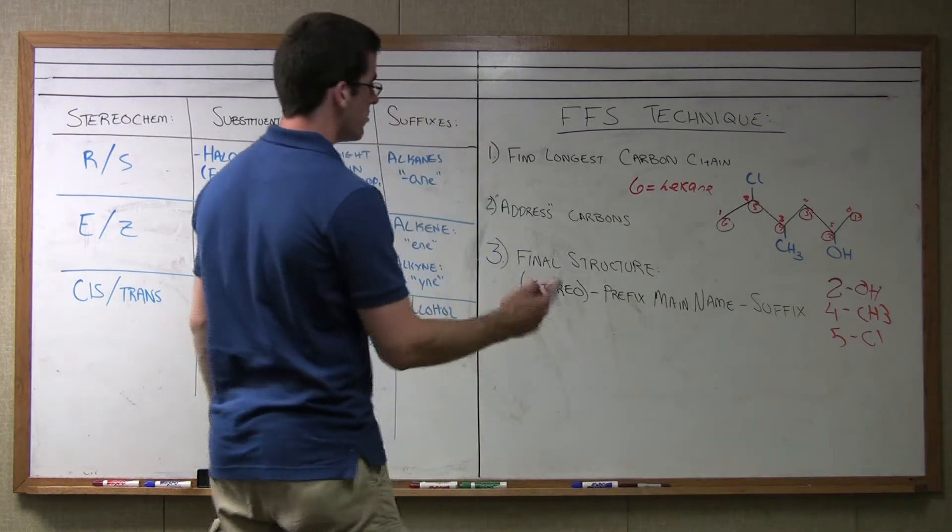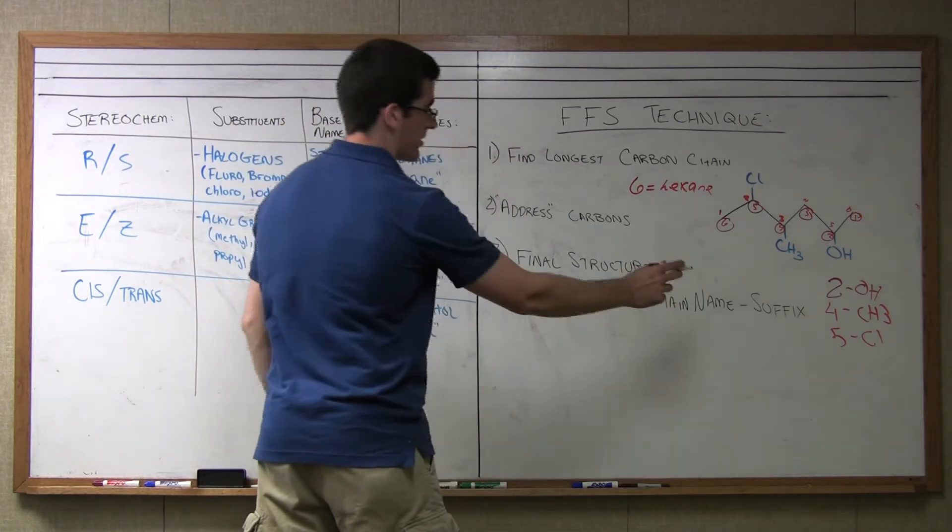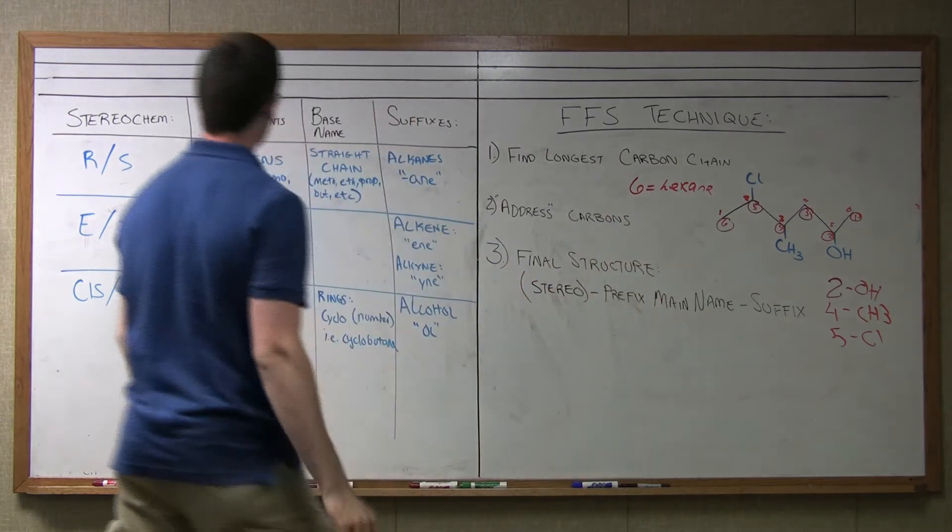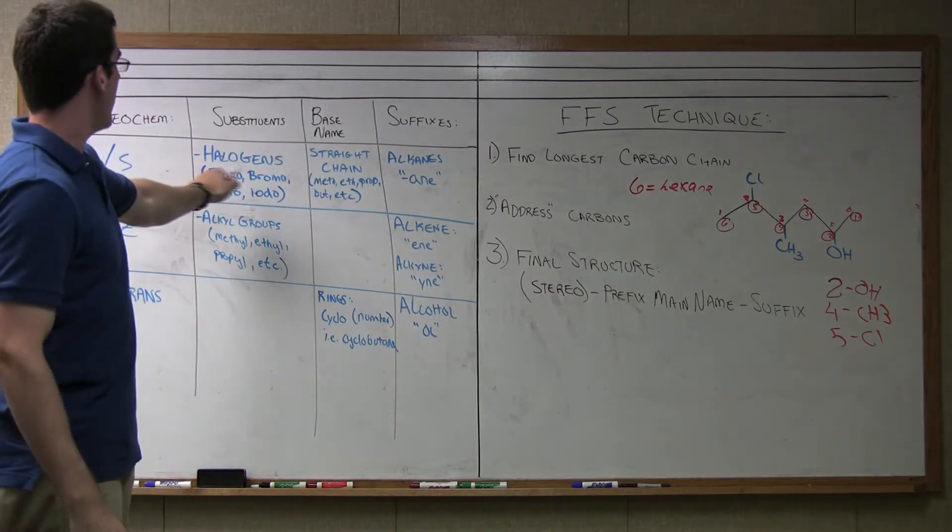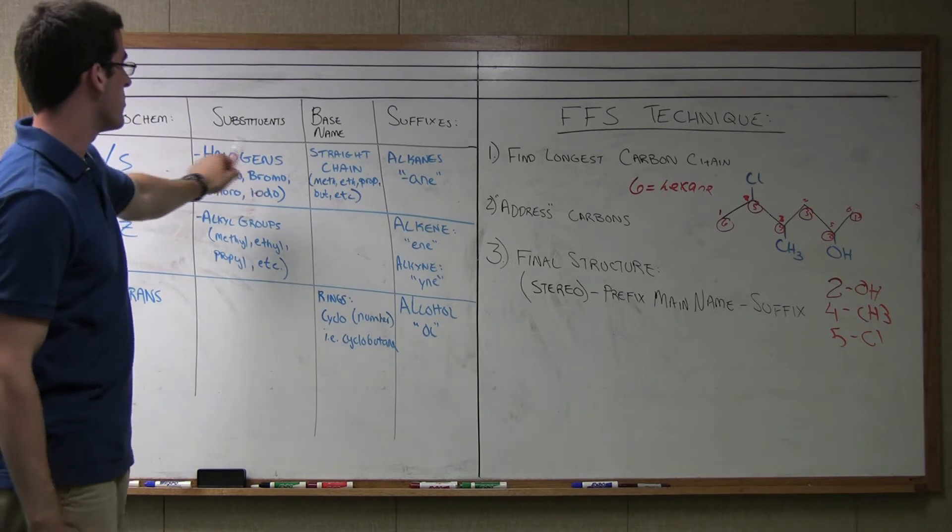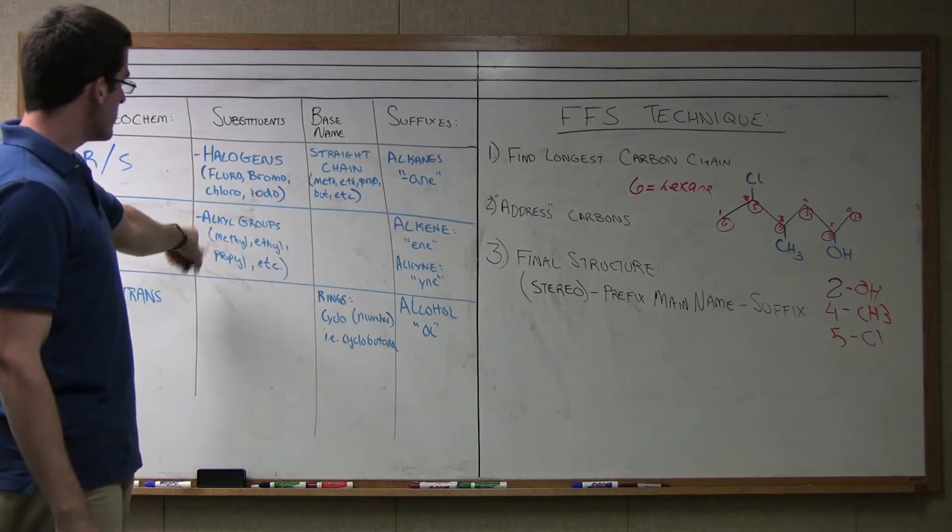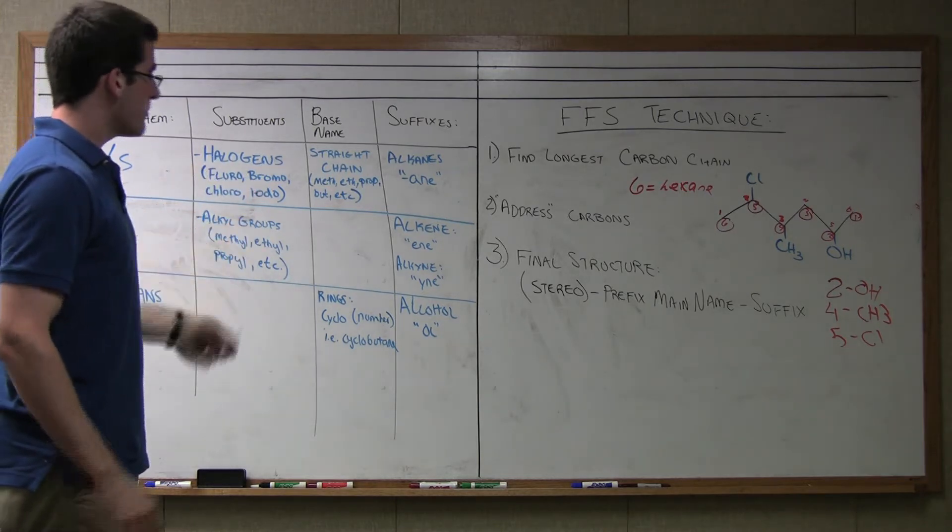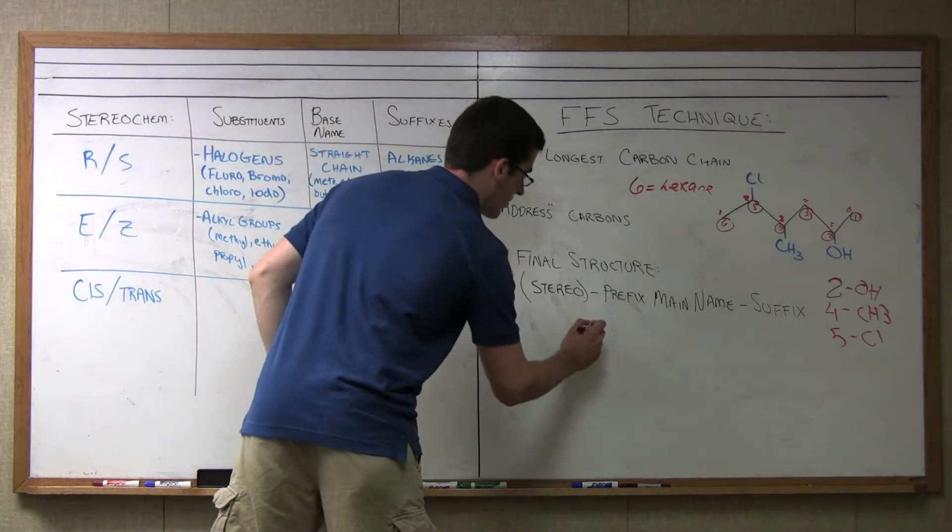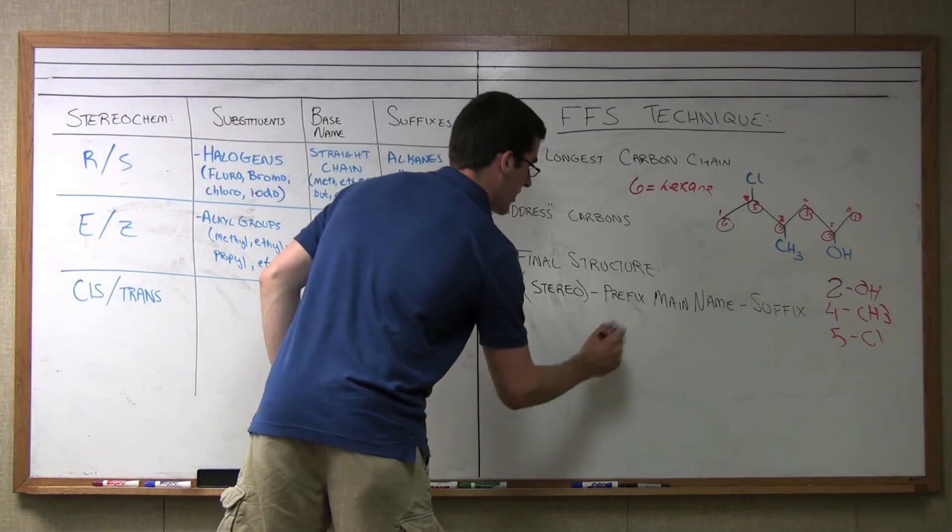So the first thing we're going to do is layer our prefixes, which we know are methyl and chlorine. So according to the rules here, halogens become things like fluoro, bromo, chloro, and our alkyl groups become things like methyl, ethyl, and propyl. So we have our methyl at four, and we have our chloro at five.